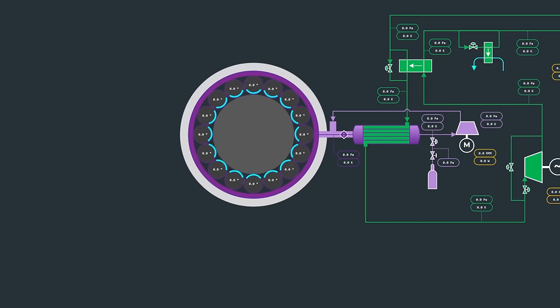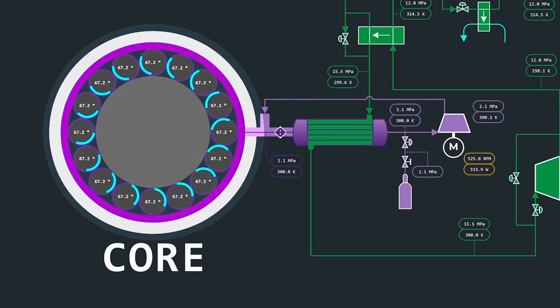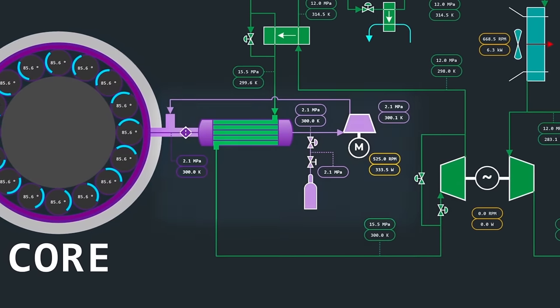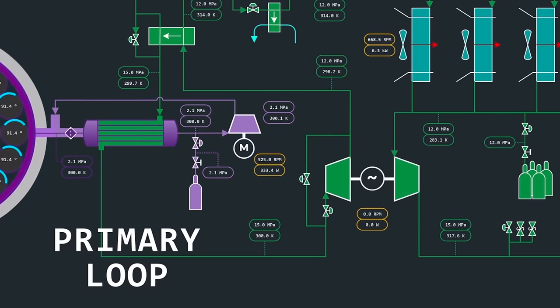Kaleidos produces heat through a controlled fission chain reaction in the graphite-moderated core. A compressor forces helium through the core in the primary loop. Helium is an inherently safe heat transfer fluid because it doesn't become radioactive.